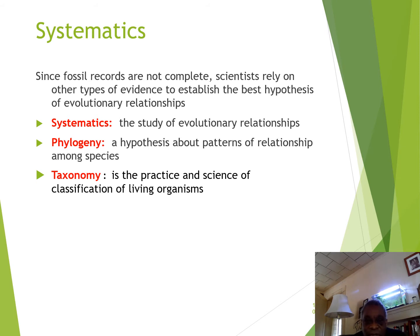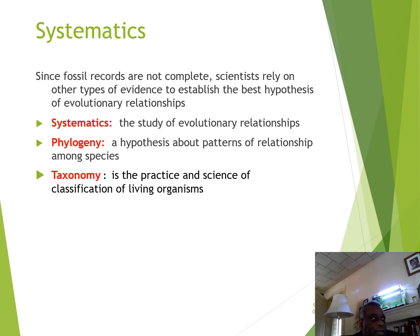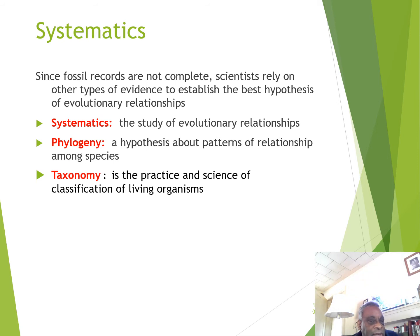When we try to figure out the history of an animal — how it evolved, what it evolved from, and what its evolutionary future might be — the fossil record itself isn't complete, so we have to do a lot of hypothesizing and inference from related species. The whole idea of figuring out how animals are related to each other is a branch of biology called systematics: the study of evolutionary relationships among different groups of animals.